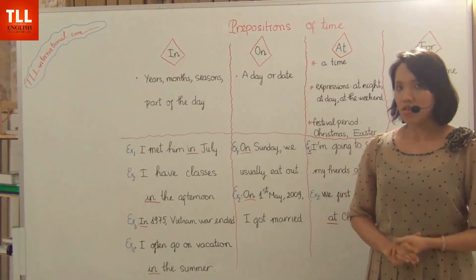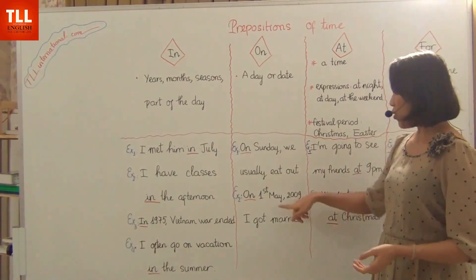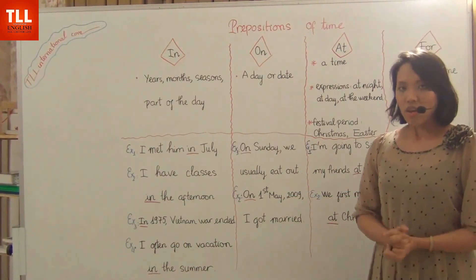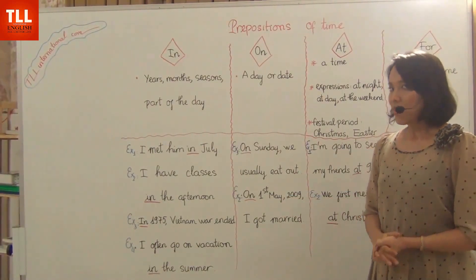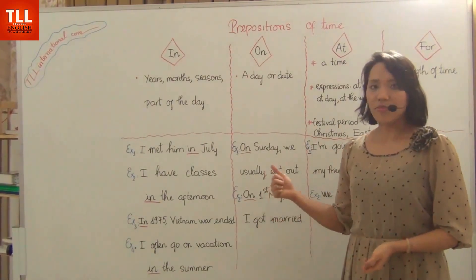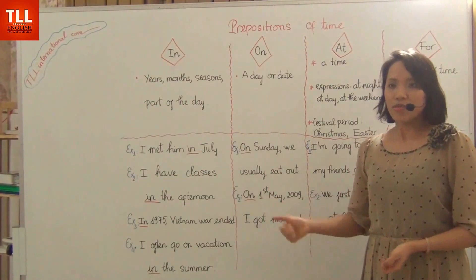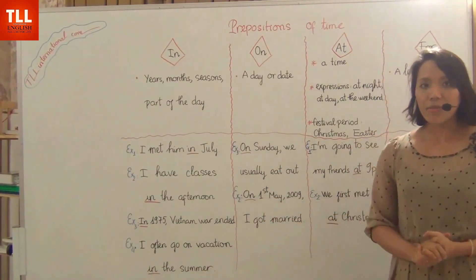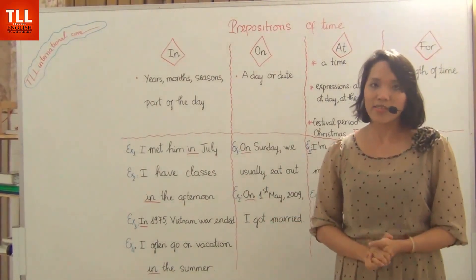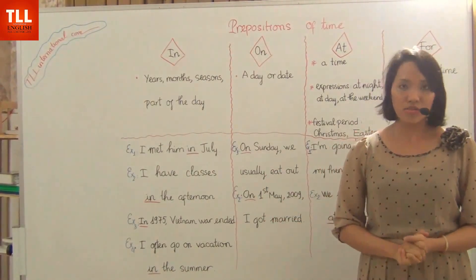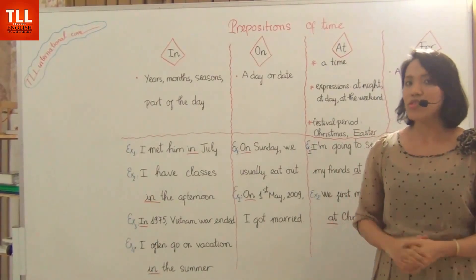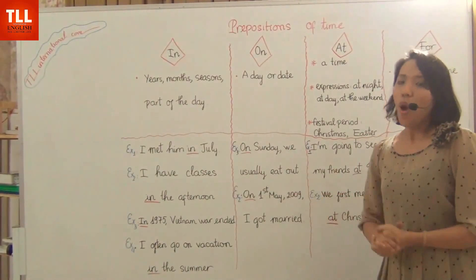Why don't we use 'in' here before the month and the year? Because there is an appearance of the day — 'the first'. So whenever there is a specific day mentioned, like 'the first', 'the second', or 'the third', we always use preposition 'on', even if there is also a month or year present.